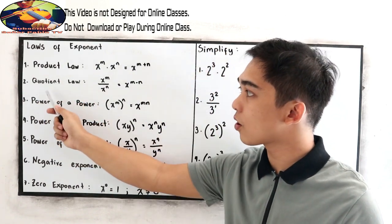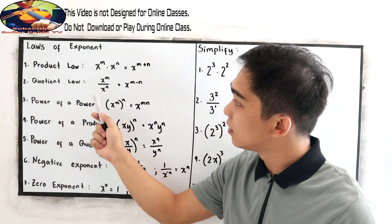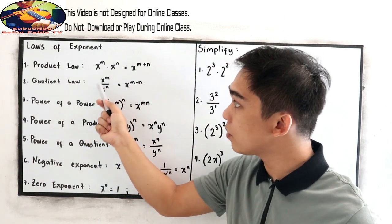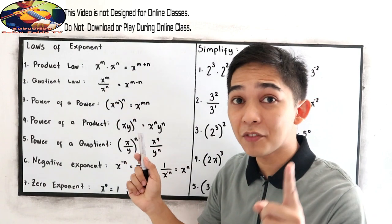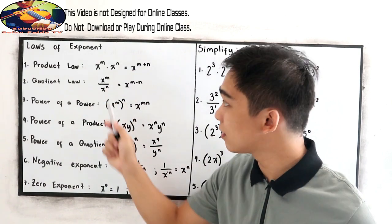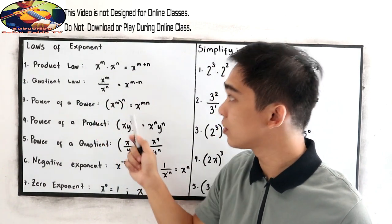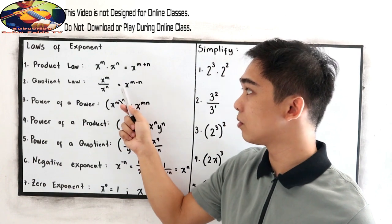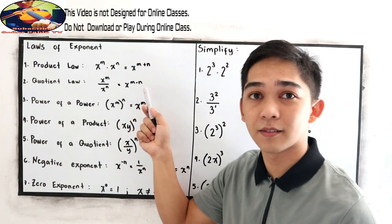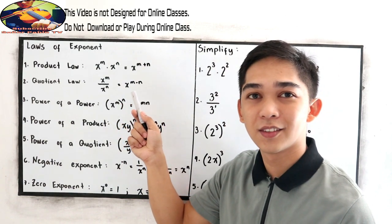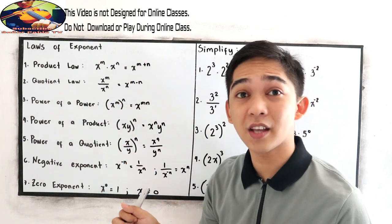The second is the quotient law: x raised to m over x raised to n. If we have the same base — in this case, x — we get x raised to m minus n. In the quotient law, we're just going to subtract the exponents.